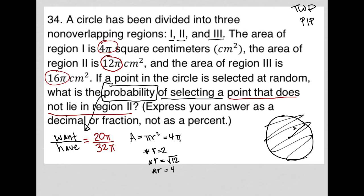So there is my probability fraction. The π is canceled out. They're not important. I have 20 over 32. The question says express your answer as a decimal or a fraction. So 20 over 32 can be reduced to 10 over 16 and then even further to 5 over 8. So that's the most reduced fraction I could use.